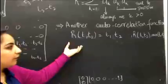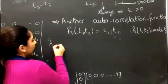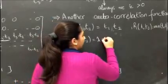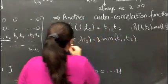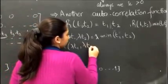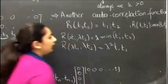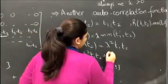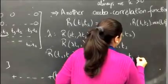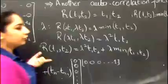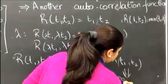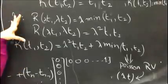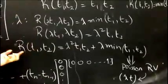For example, if we multiply both t1 and t2 by a scalar λ, one of the autocorrelation functions becomes λ * min(t1, t2) and the other becomes λ² * t1 * t2. Adding these two autocorrelation functions gives another autocorrelation function, which is actually the autocorrelation function of a Poisson random variable with parameter λt. So we can say that a scalar or linear combination of two autocorrelation functions yields another autocorrelation function.